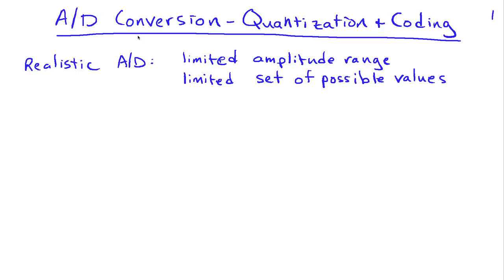A realistic A to D has both a limited amplitude range. In other words, it can't represent signals of arbitrary size. And of course, we're accustomed to that because amplifiers and so on have limited input ranges as well.